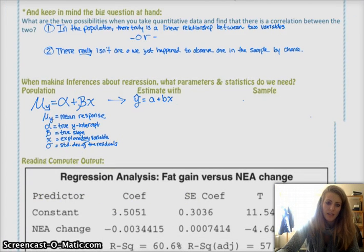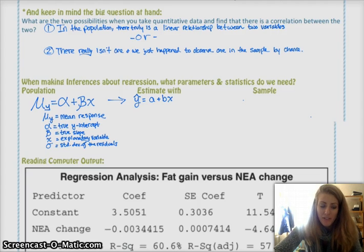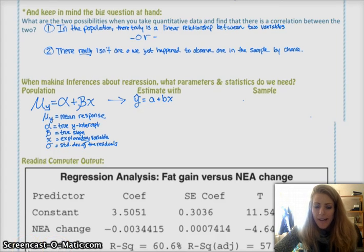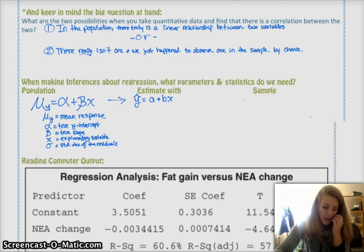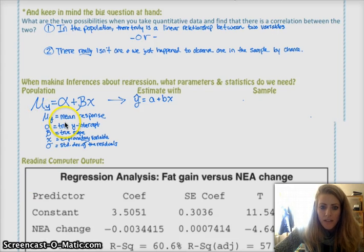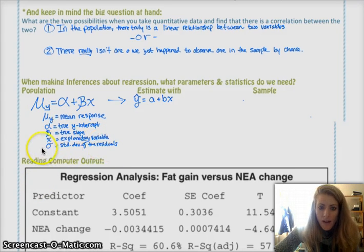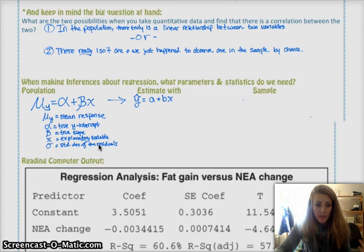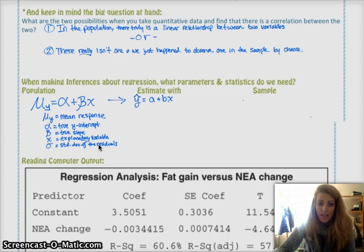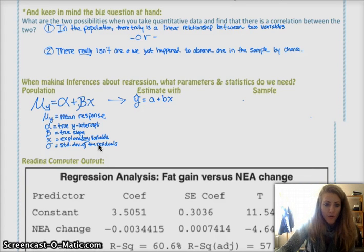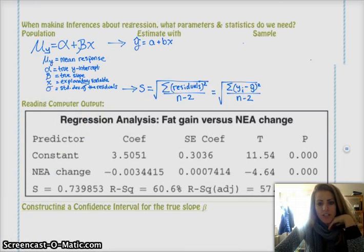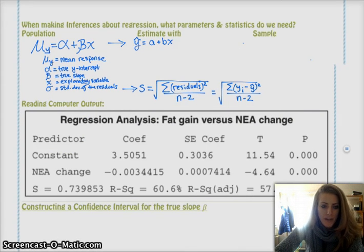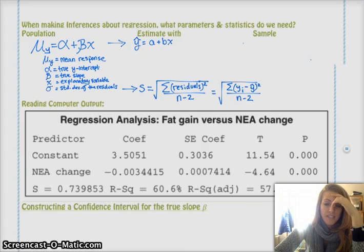We estimate alpha with the y intercept of our sample, which is a, and then the slope b we are estimating for beta. And then the standard deviation, this is something that you're going to want to have, is the standard deviation of the residuals. We don't usually know the standard deviation of the residuals for the true population, because you don't usually have the true population or any information about the true population. But we do have a formula for the standard deviation of the residuals as an estimate. So s is the standard deviation of the residuals, so you add up all the residuals, square them, divide by n minus 2 in this case, and then take the square root of it.